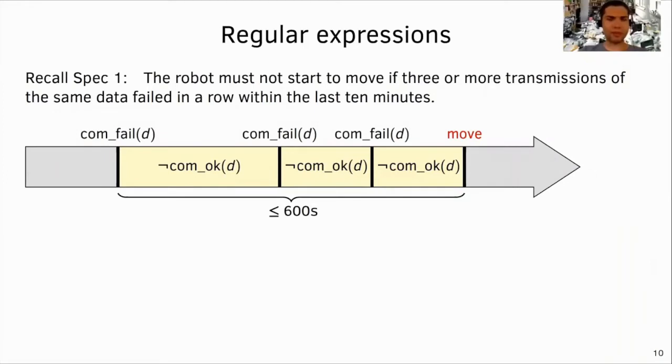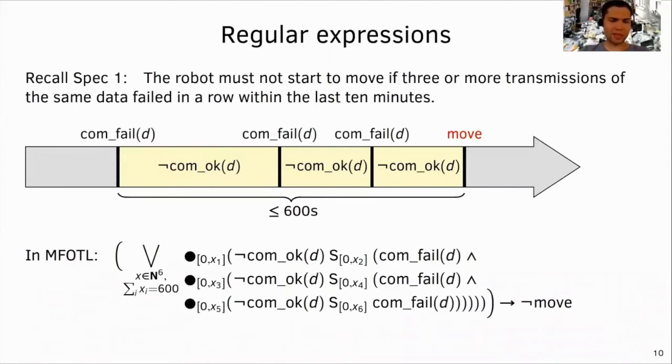So, there is this rocket guy who gave me a policy and I have a lot of trouble formalizing it in mFOTL. Maybe you can help me with that. The specification is that the robot must not start to move if three or more transmissions of the same data failed in a row within the last 10 minutes. So, here is my formalization attempt. The idea is to partition the events into three groups, starting with a failed communication and then no successes in between. So, in the formula, I'm using three nested SINCE operators to express this. But I also need to ensure that the total time of this pattern is at most 10 minutes. I can only annotate individual SINCE operators with an interval. So, I have to look at all possible decompositions of this time interval. Here, I'm writing this as a big meta-disjunction, but that causes the size of the formula to blow up.